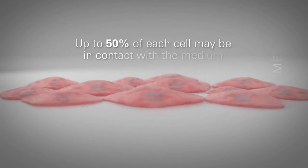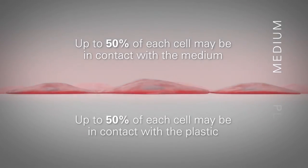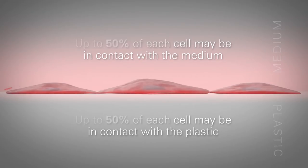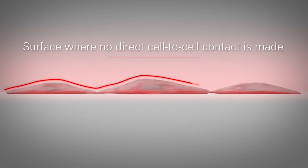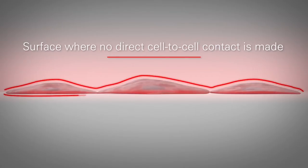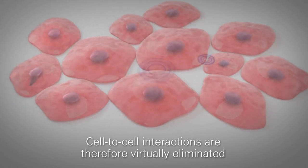Up to 50% of each cell may be in contact with the medium, and up to 50% may be in contact with the plastic. The red line shows the surface where no direct cell-to-cell contact is made. Cell-to-cell interactions are therefore virtually eliminated.